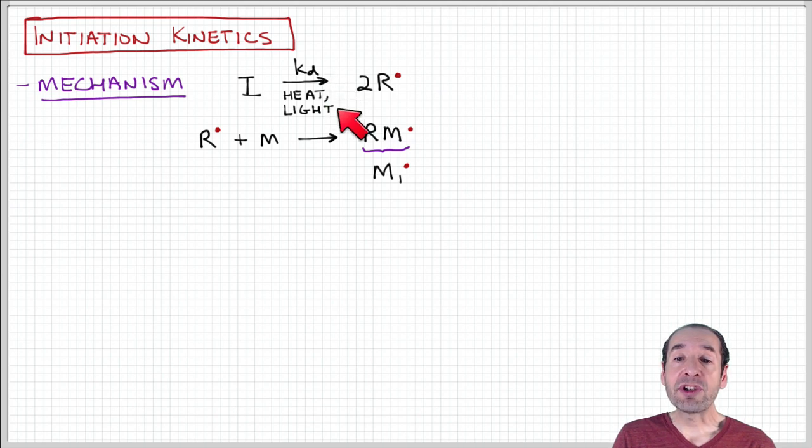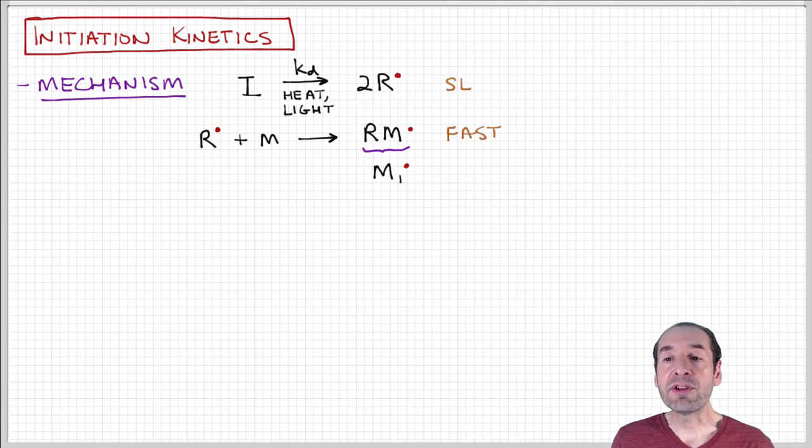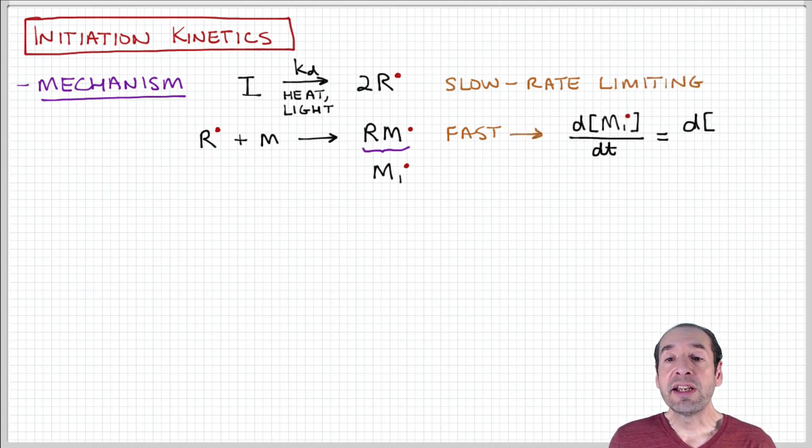Remember that when we're talking about homolysis, which are some of the most common types of initiation, those are driven by addition of heat or light to break the chemical bonds that produce the radical species. This first step, the decomposition step, is the slow part of the process or the rate limiting step. So this is what will be involved in expressing the overall kinetics of this process.